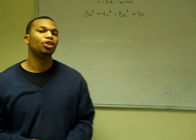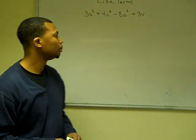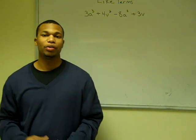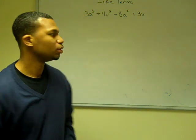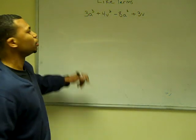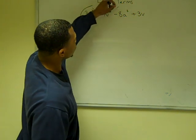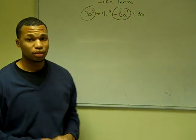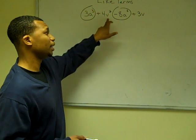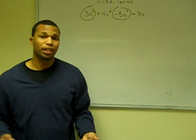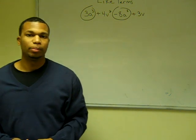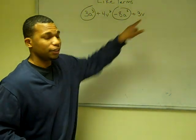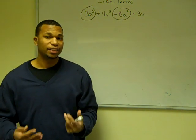In the expression 3a³ plus 4v² plus 8a³ plus 3v, we only have one set of like terms, which is the a³ terms. So 3a³ and negative 8a³ are the only like terms. You might wonder why v² and v aren't like terms — remember, like terms must have the exact same factors. This term has v² and the other has v, so they do not have the exact same factors.